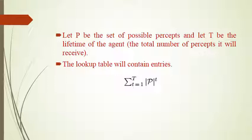We can calculate the total possible percepts. Let P be the set of possible percepts and capital T be the lifetime of the agent. The total number of percepts it will receive will be the summation from T equals one up to capital T, and the total number of percepts will be on the order of |P| to the power of T.